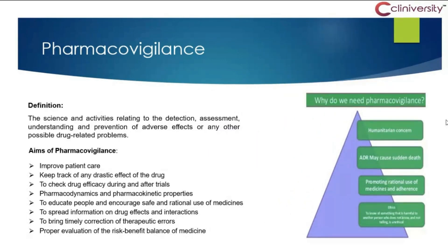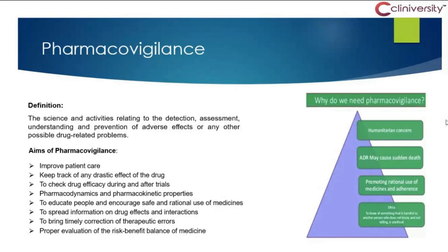Overall, why do we need pharmacovigilance? One is humanitarian grounds — so that we can have a better drug for people's use. Many drugs can cause sudden death — you never know — a variety of interactions and reactions can lead to all these things. If we don't study, who will study for us? Nobody else. We have to study our drug. We are from a science background, we hold that capacity, we hold that brain to investigate the drug in a better way. We should all have that curiosity within our hearts.